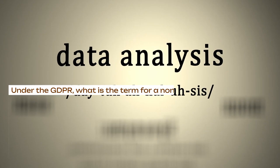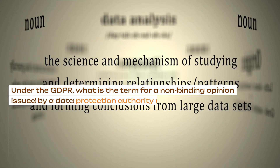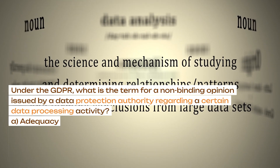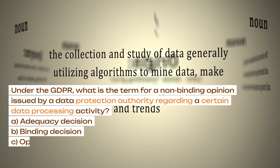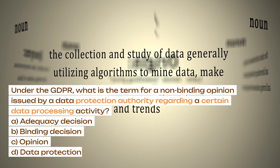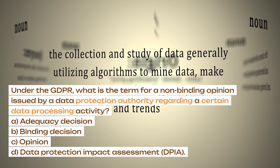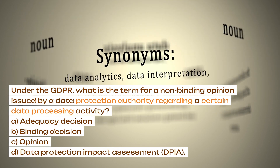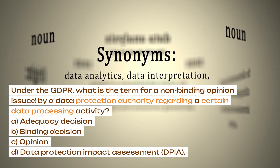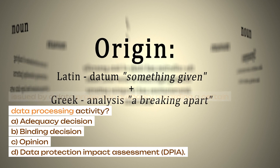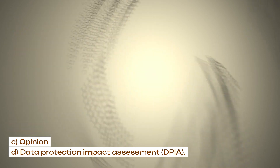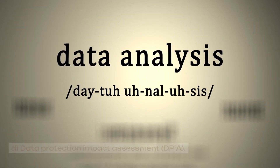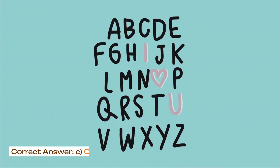Under the GDPR, what is the term for a non-binding opinion issued by a data protection authority regarding a certain data processing activity? A. Adequacy decision. B. Binding decision. C. Opinion. D. Data Protection Impact Assessment (DPIA). Correct answer: C. Opinion.